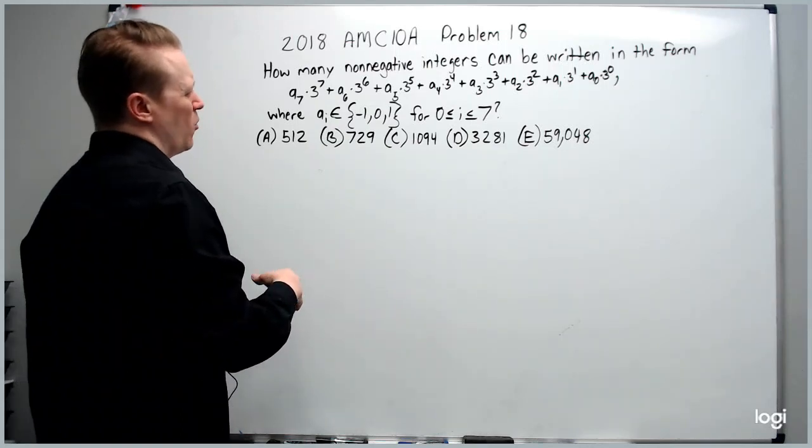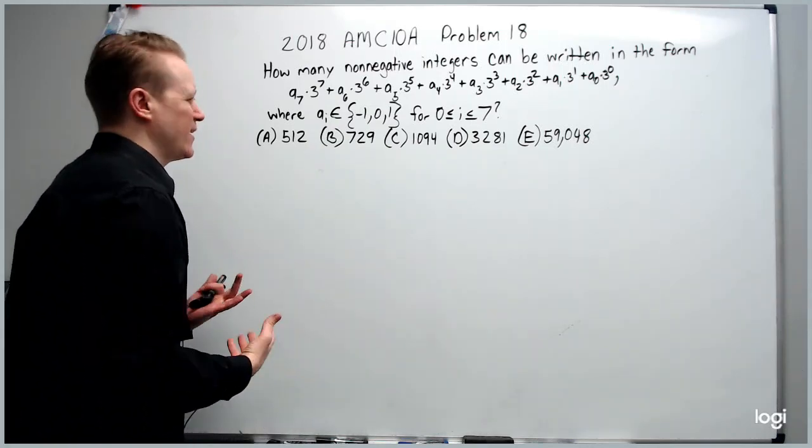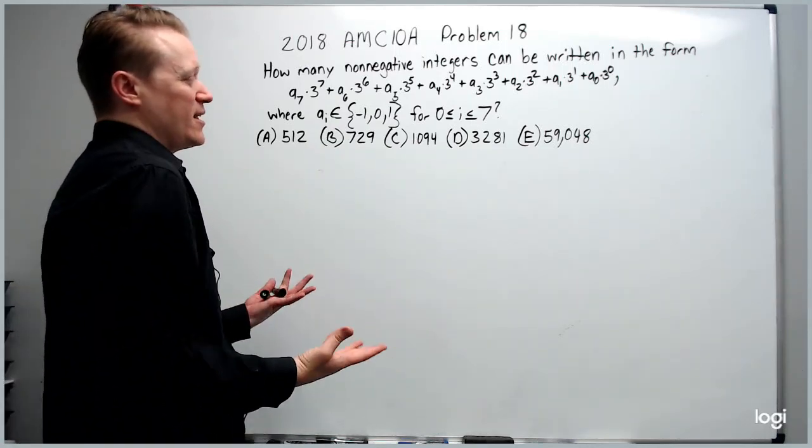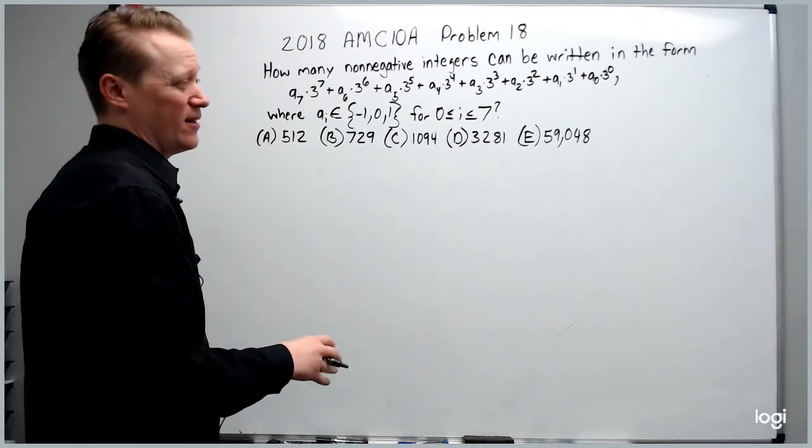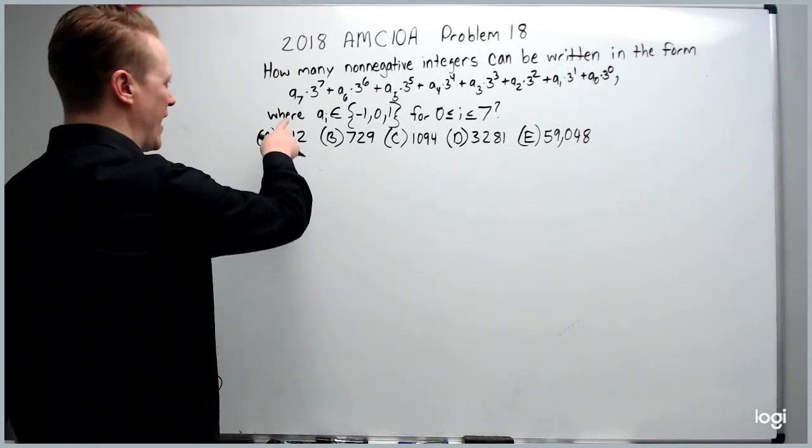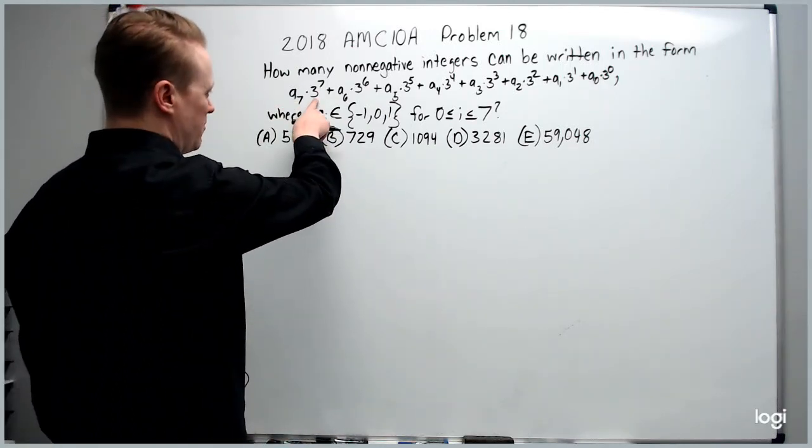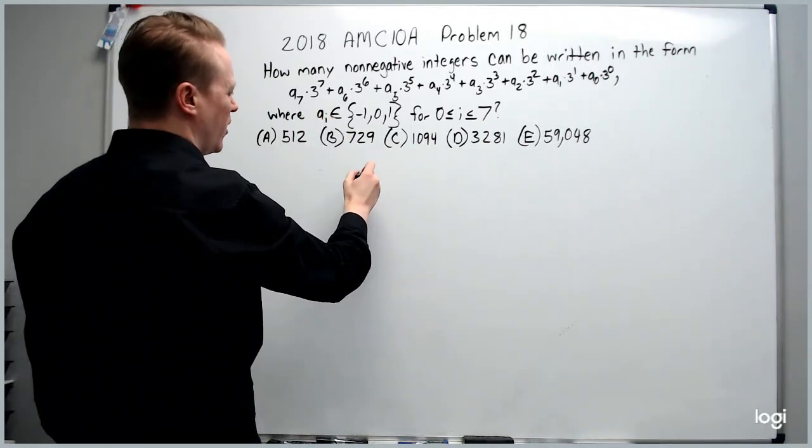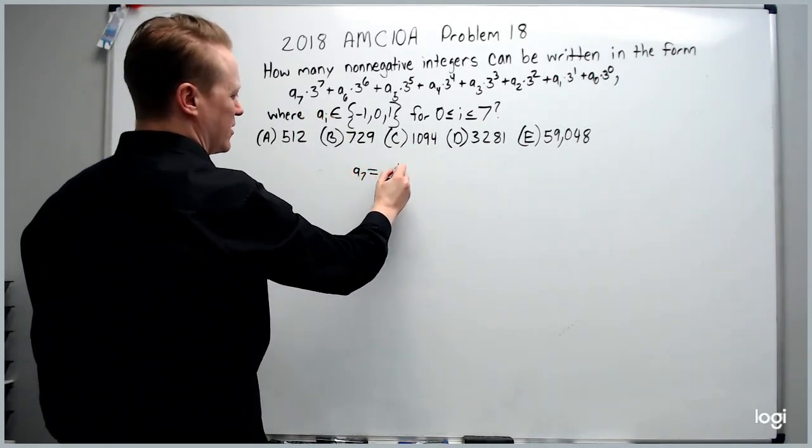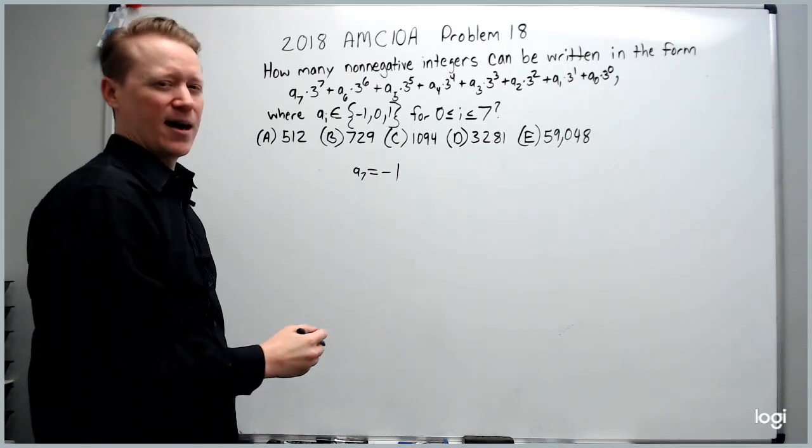So where do we begin? It can feel like, again, a problem we've never seen something quite like before. Just start wherever you can. Just play the what if game. What if a sub 7 is going to be the most powerful one on here, because it's 3 to the 7th. What if a sub 7 equals negative 1? What if that happens?